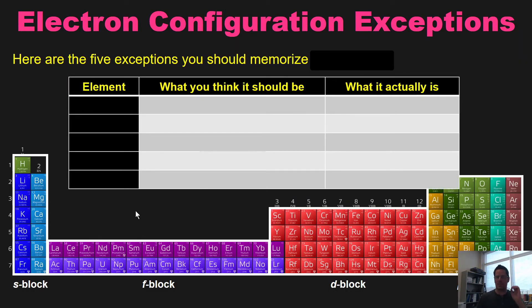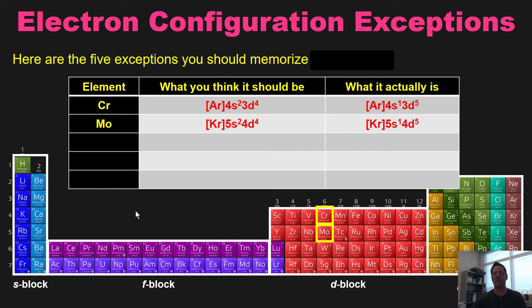So here are the 5 exceptions that you should memorize. Chromium, which is element 24 right down here in the periodic table, you would think would have an electron configuration of argon-4s2-3d4. But in reality, and I just explained why, it actually has an electron configuration of argon-4s1-3d5. By extension, molybdenum, that's immediately beneath chromium here, you'd think would have an electron configuration of krypton-5s2-4d4. But in reality, its electron configuration is krypton-5s1-4d5.